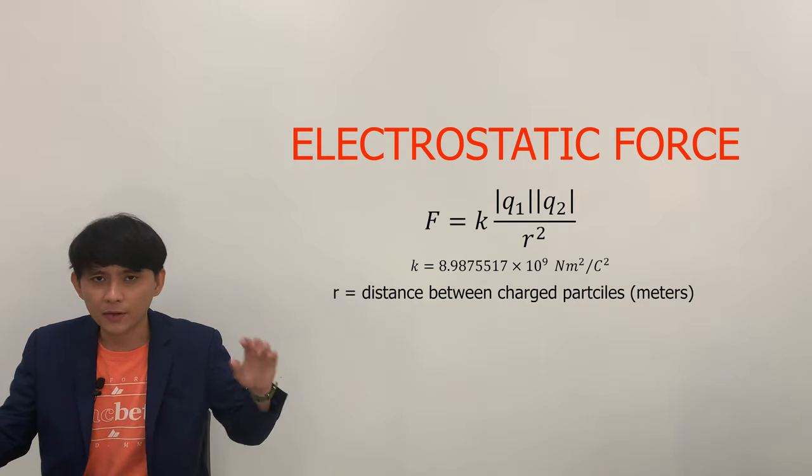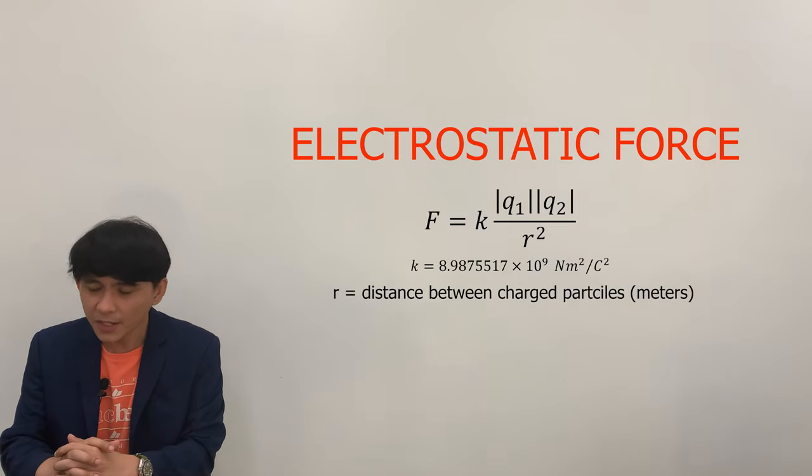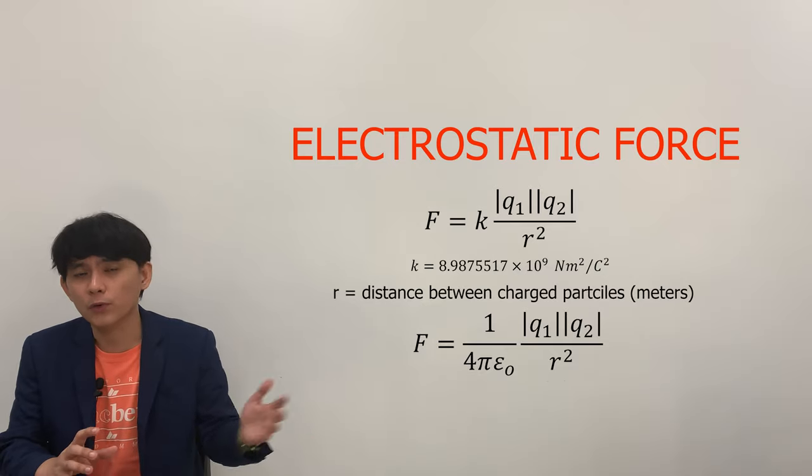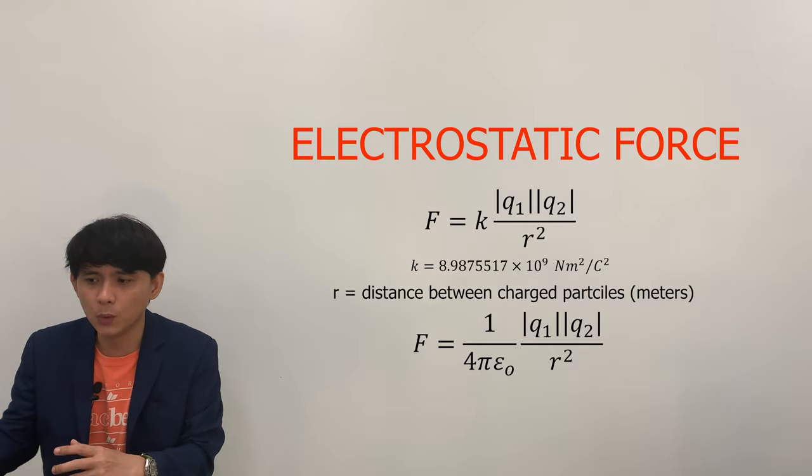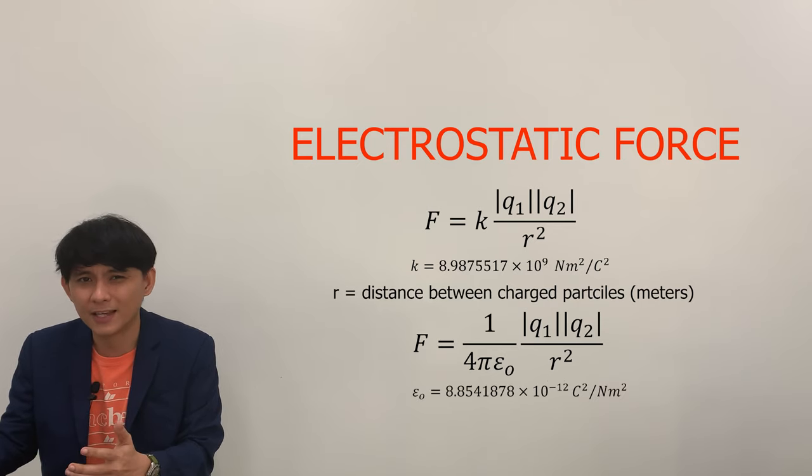The constant K can also be equated to 1 over 4 pi epsilon naught, where epsilon naught is the permittivity of free space, which has a value of 8.85 times 10 to the negative 12 coulomb squared over Newton meter squared.